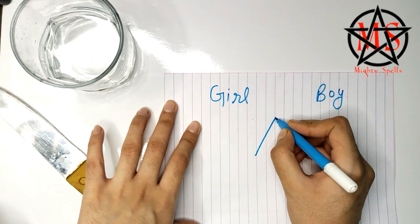You have to write this all on the piece of paper and after doing this you have to make a cross like this.